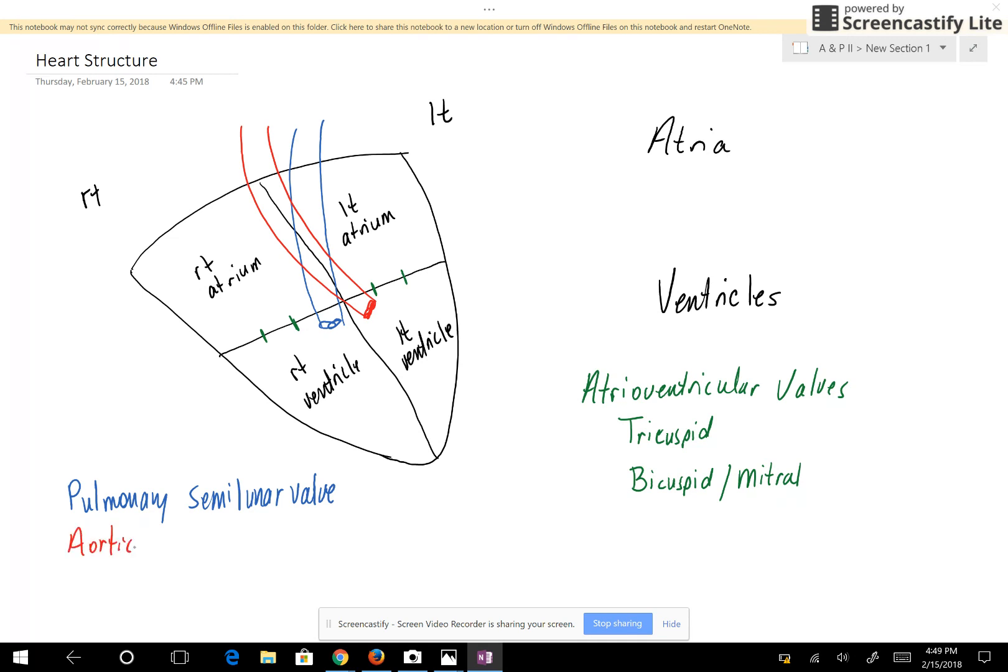Collectively, the pulmonary semilunar valve and the aortic semilunar valve are called semilunar valves. That's the structure of the heart.